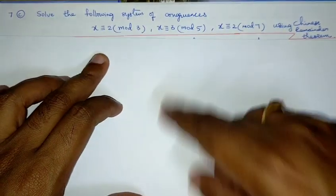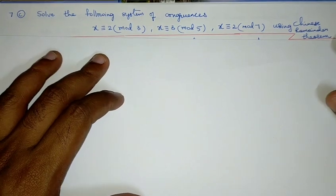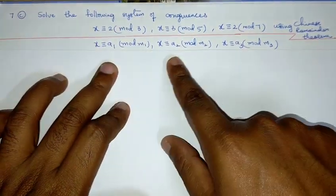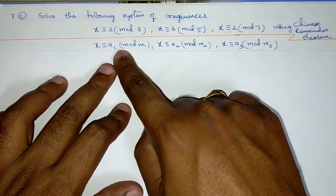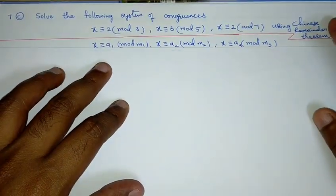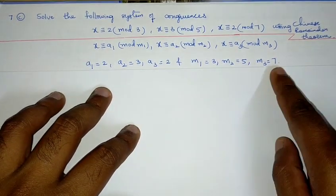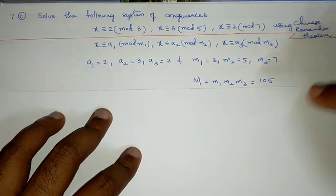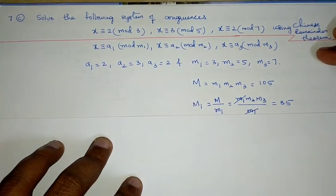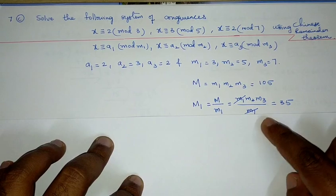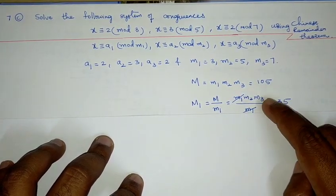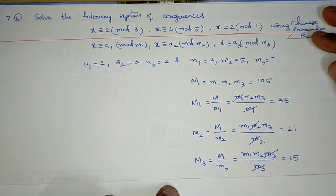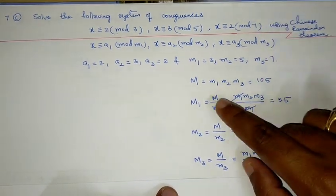Next question: solve the system of congruences x ≡ 2 (mod 3), x ≡ 3 (mod 5), x ≡ 2 (mod 7) using the Chinese Remainder Theorem. The general form is x ≡ a1 (mod m1), x ≡ a2 (mod m2), x ≡ a3 (mod m3). By comparison: a1=2, a2=3, a3=2 and m1=3, m2=5, m3=7. We compute M = m1·m2·m3 = 105, M1 = M/m1 = 35, M2 = M/m2 = 21, M3 = M/m3 = 15.